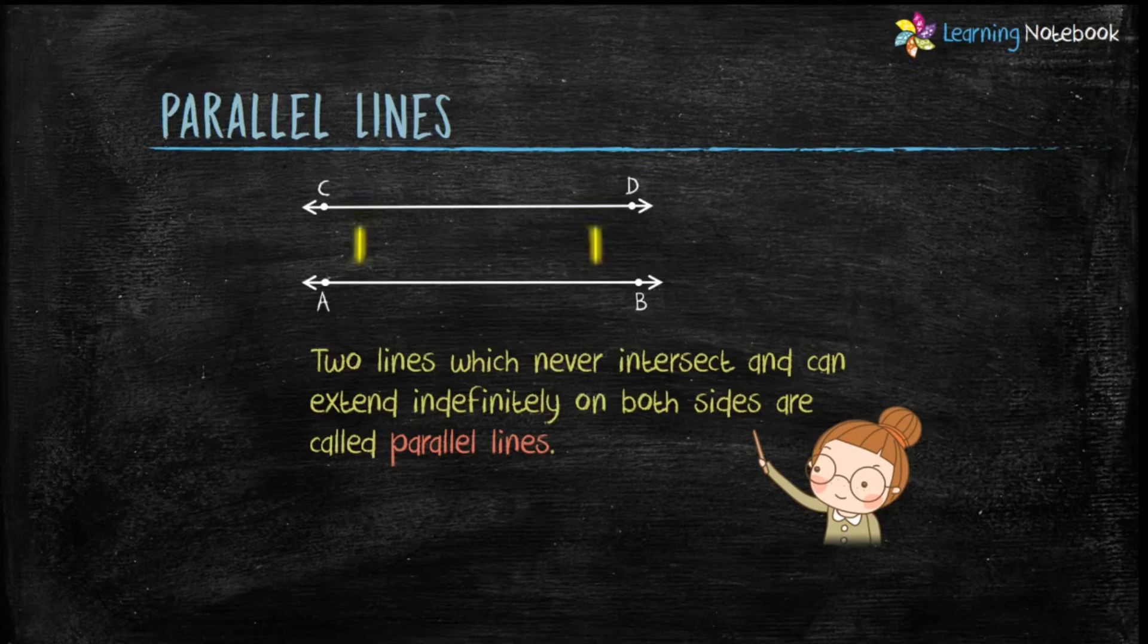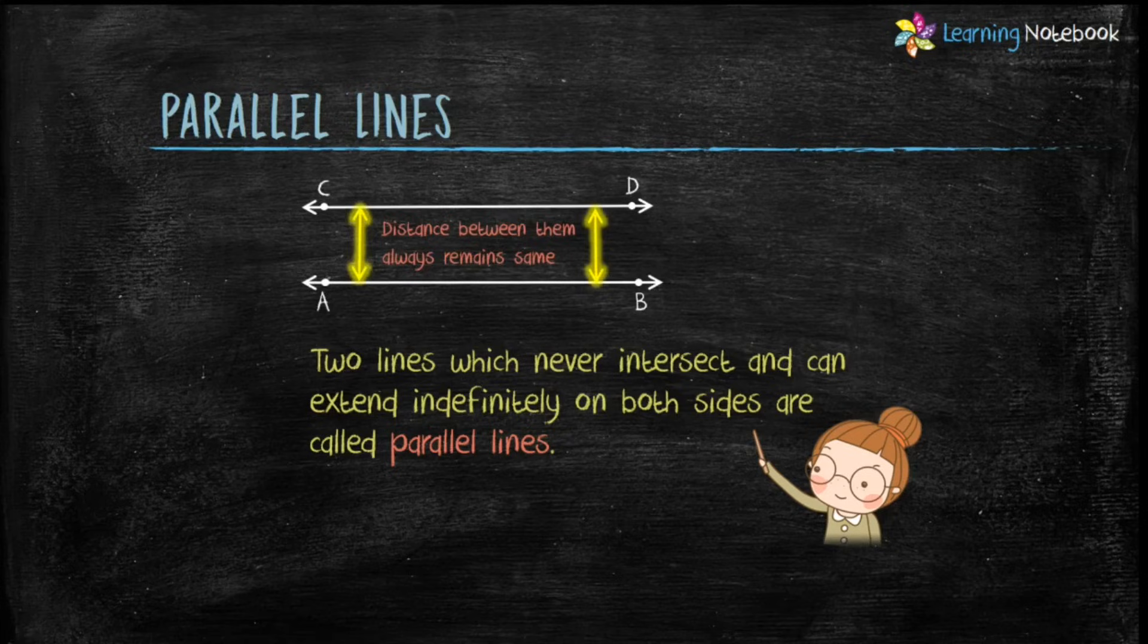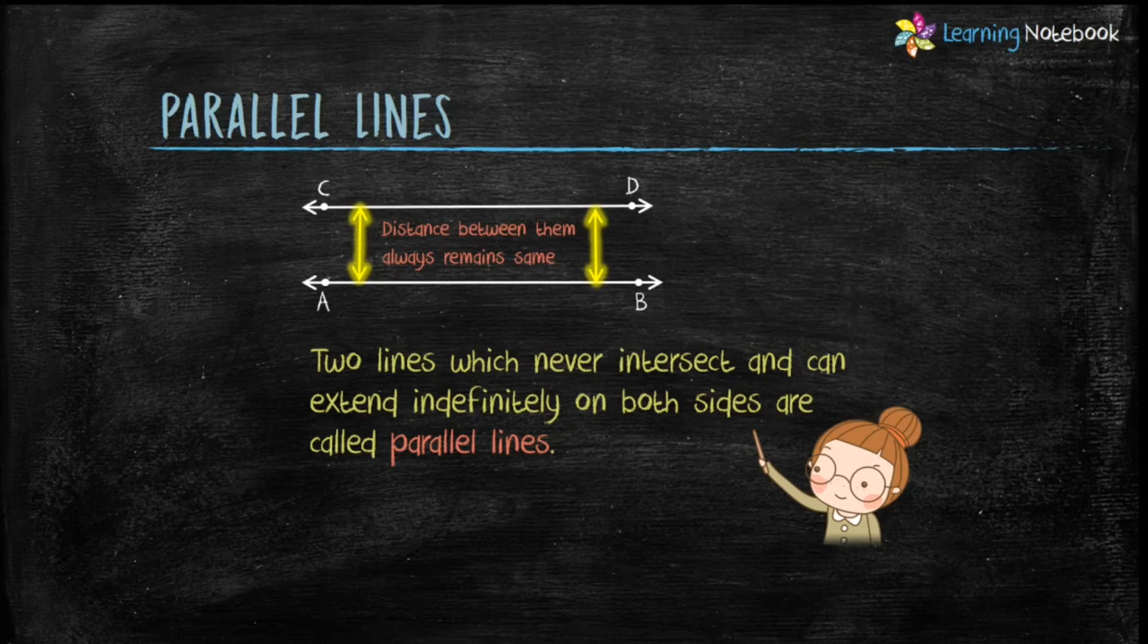Here as you can see line AB is parallel to CD. Students remember that distance between two parallel lines always remains same and that is why these parallel lines never intersect each other.